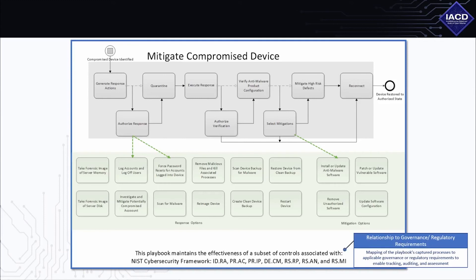The fifth and final type of content found in an IACD playbook is the relationship to governance or regulatory requirements. A playbook defines a set of process steps in response to an initiating condition and in accordance with local policy in order to reach the end state. This content type identifies the mapping of key process steps to the appropriate security controls, regulatory requirements, or other governance-related requirements addressed by the playbook. A significant playbook benefit is in showing how it supports consistent application and implementation of security processes and associated controls.